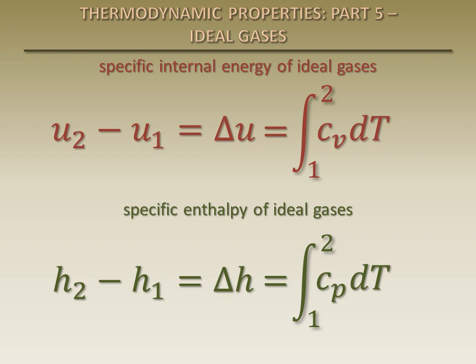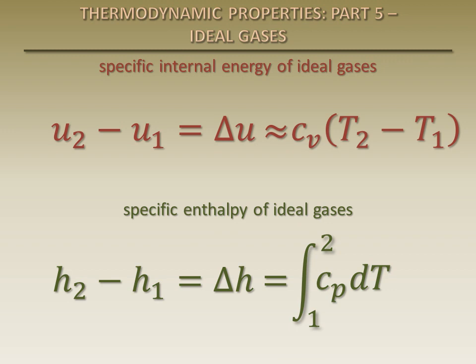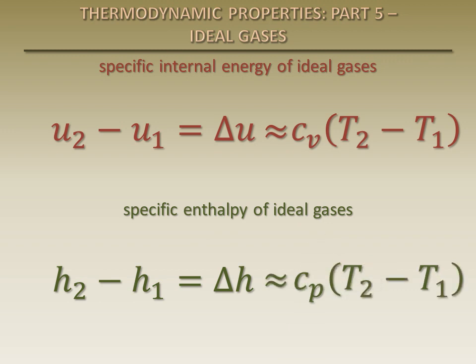It is a common approximation to assume that the specific heats do not change with temperature. The constant specific heat can therefore come out of the integral, and the change in specific internal energy during a process simply becomes the specific heat at constant volume times the change in temperature of the ideal gas during the process. Similarly, the change in specific enthalpy during a process is the specific heat at constant pressure times the change in temperature of the ideal gas. If you approximate the specific heats as constant, it is best to use average specific heat values at the initial and final temperatures. In addition, the specific internal energy and specific enthalpy of some ideal gases can be found in property tables as functions of temperature.